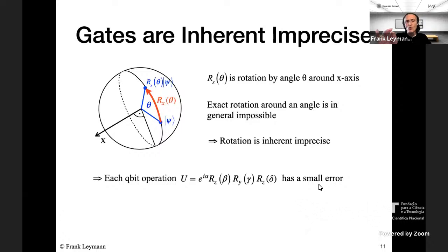A quantum algorithm consists of a series of unitary operations. The desired result phi_t comes from applying the algorithm to the initial state phi_0. But because each operation U_i is slightly imprecise, instead of U_i, an imprecise operation Ũ_i is performed. Applying the first gate results not in phi_1 but in Ũ_1(phi_0), which is phi_1 plus a small error — this is gate infidelity.